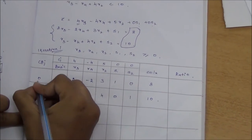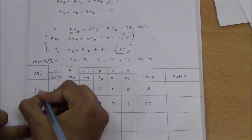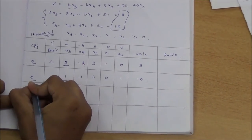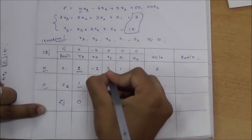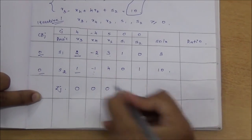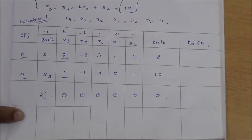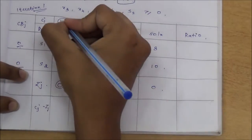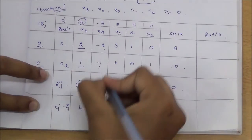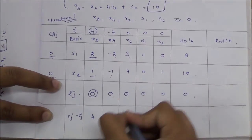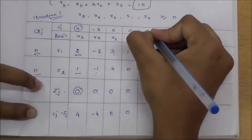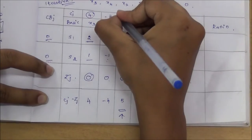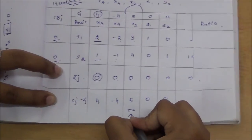For zj, we multiply the basic variable coefficients by each column. 0 × 2 plus 0 × 1 = 0; 0 × (−2) plus 0 × (−1) = 0; 0 × 3 plus 0 × 4 = 0 — all zj values are 0. For cj minus zj: 4 − 0 = 4; −4 − 0 = −4; 5 − 0 = 5; 0 − 0 = 0; 0 − 0 = 0. The greatest value is 5, so x2 is the entering variable.